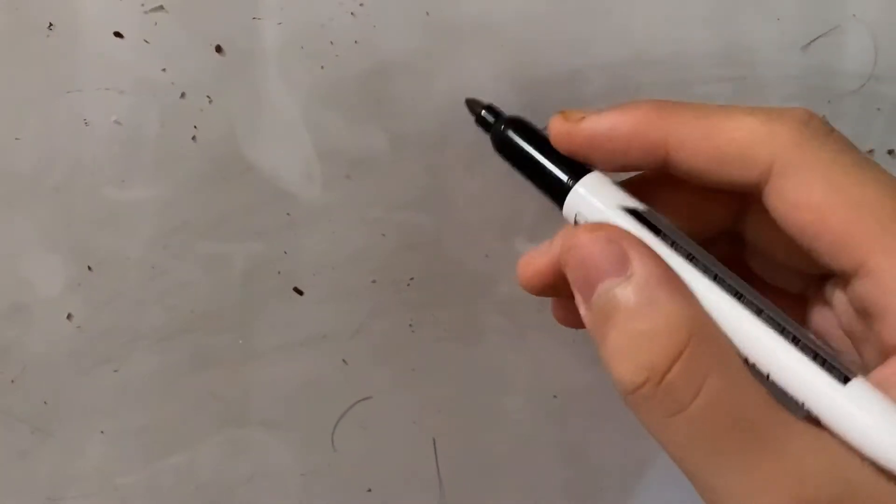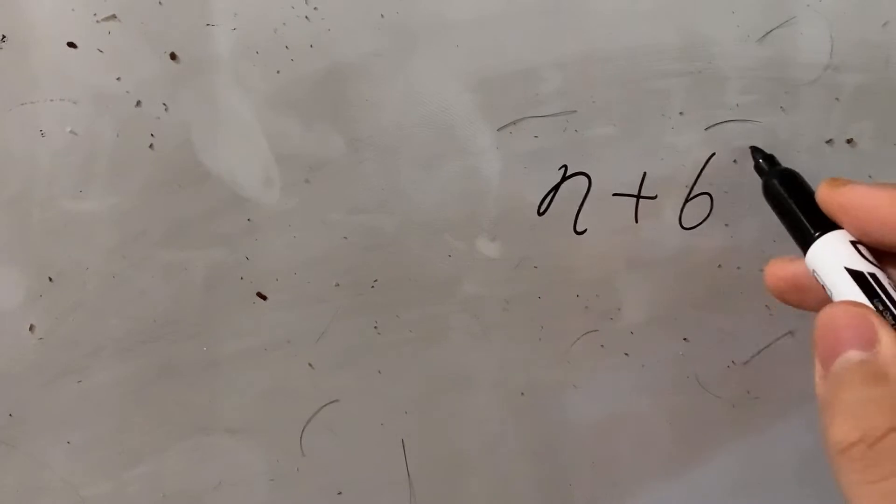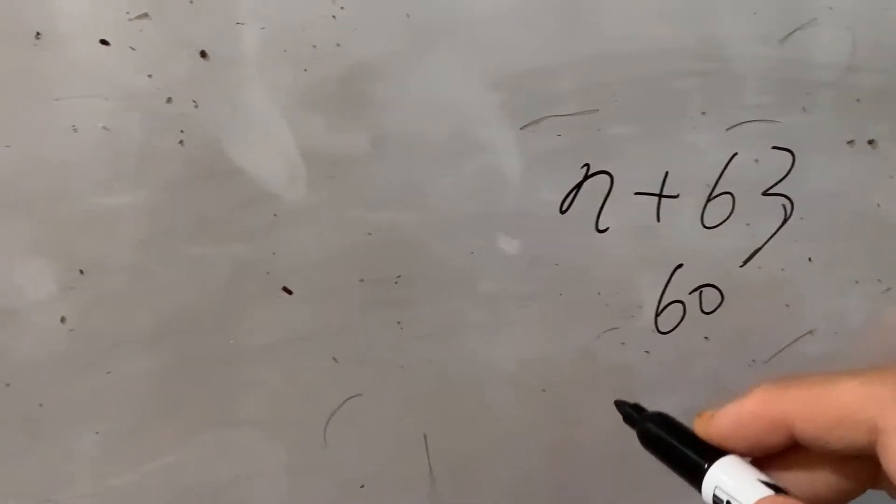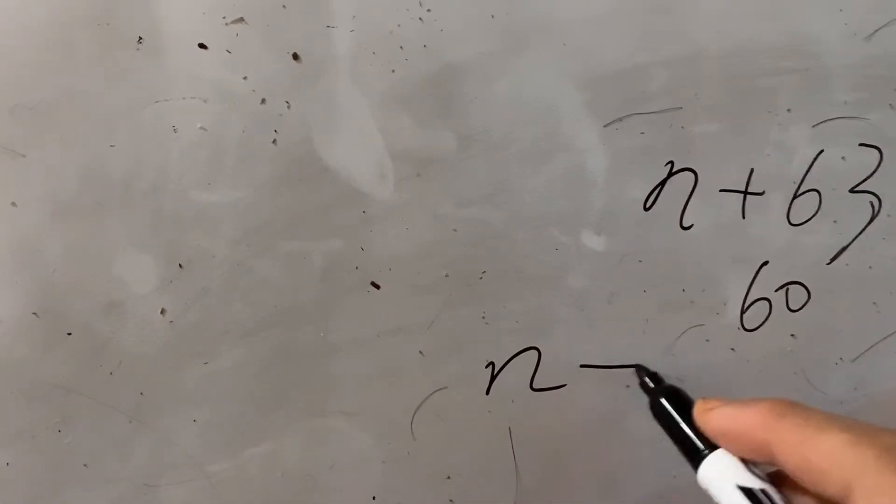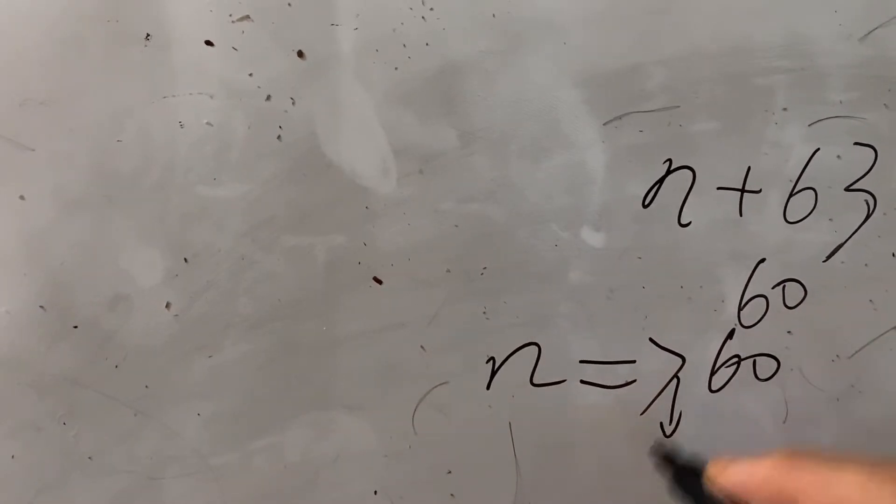Which is, we know when the number is n plus 63, it is going to be divisible by 60. So in this case, n must be divisible by 57. I mean, when it divides 60, the remainder is 57.